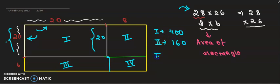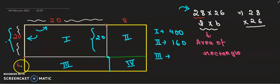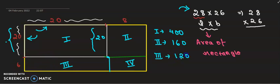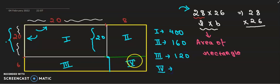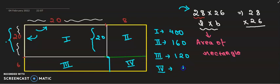For the third rectangle, we use the same way: length into breadth. The length is 20 and width is 6, so 20 into 6 is 120. And for the fourth rectangle, the area is length into breadth, and in this case length is 8 and breadth is 6, so 8 into 6 is 48.